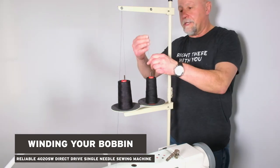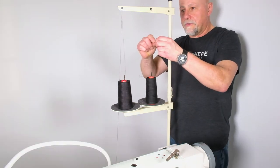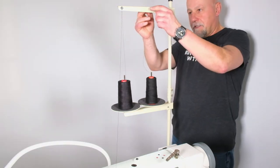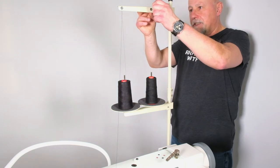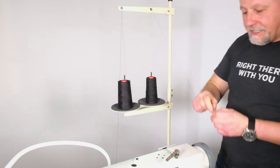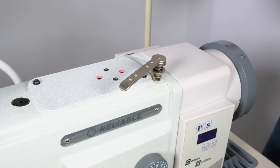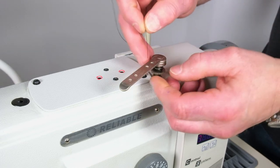Loading the thread for the bobbin winder. Put your cone of thread on the thread stand, bring it up to the thread stand eyelet loading it from back to front. Bring the thread down to your bobbin winding tension assembly.